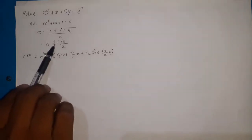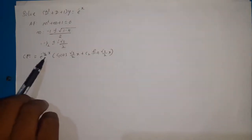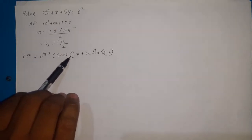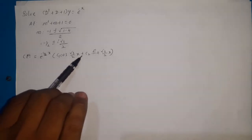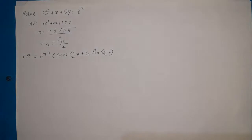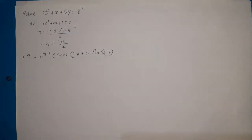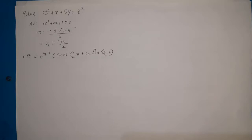For this complex root, the complementary function is e^(αx)(c₁cos βx + c₂sin βx), where α = -1/2 and β = √3/2. So the complementary function is e^(-x/2)(c₁cos(√3/2 · x) + c₂sin(√3/2 · x)). Up to this step we use knowledge from previous examples. Now we need to find the particular integral.